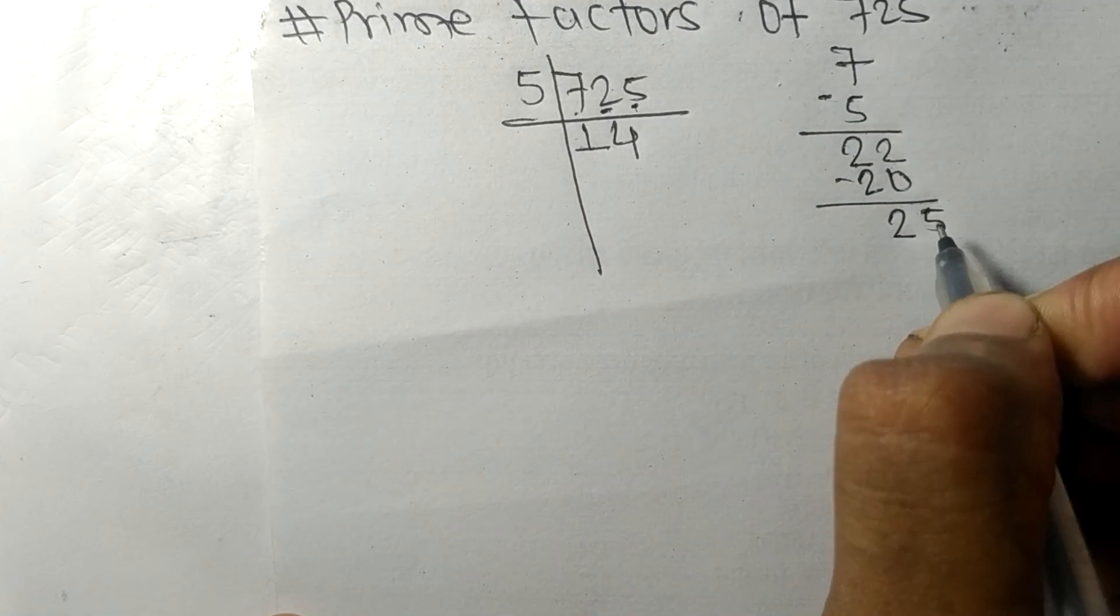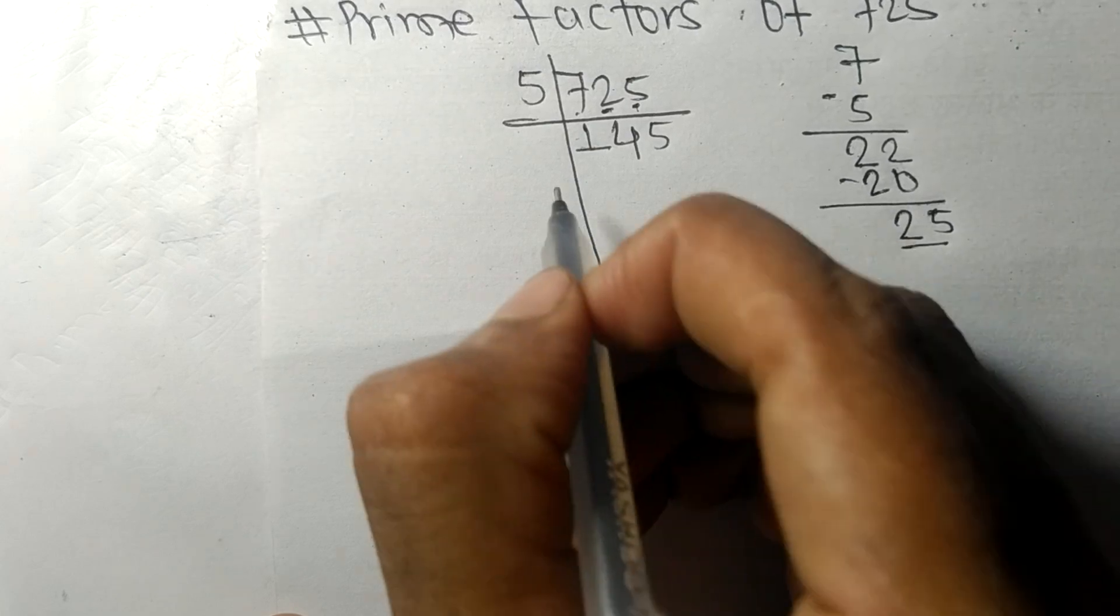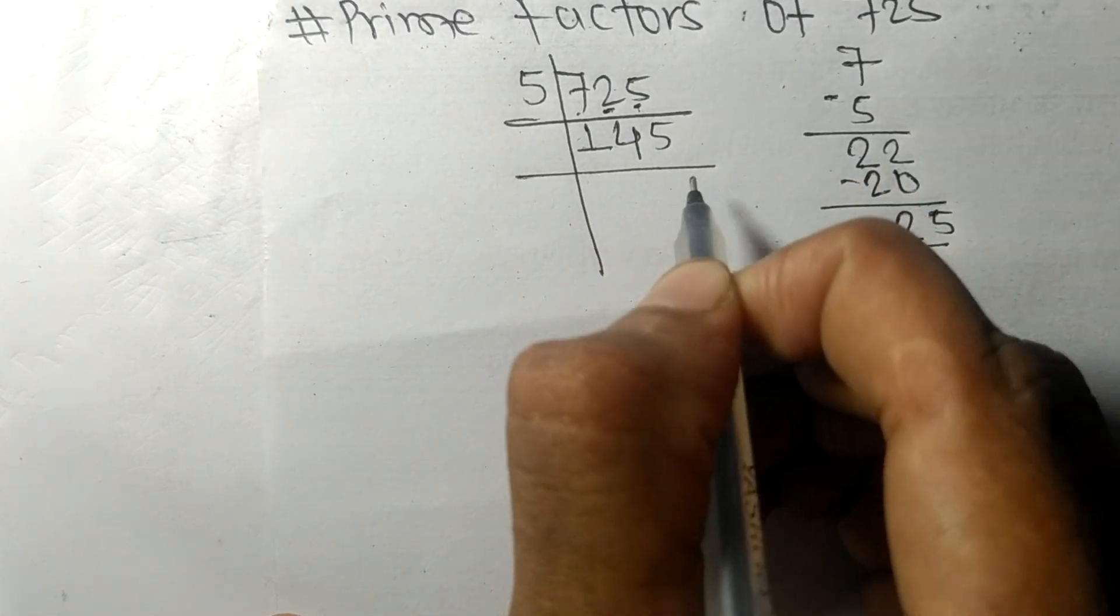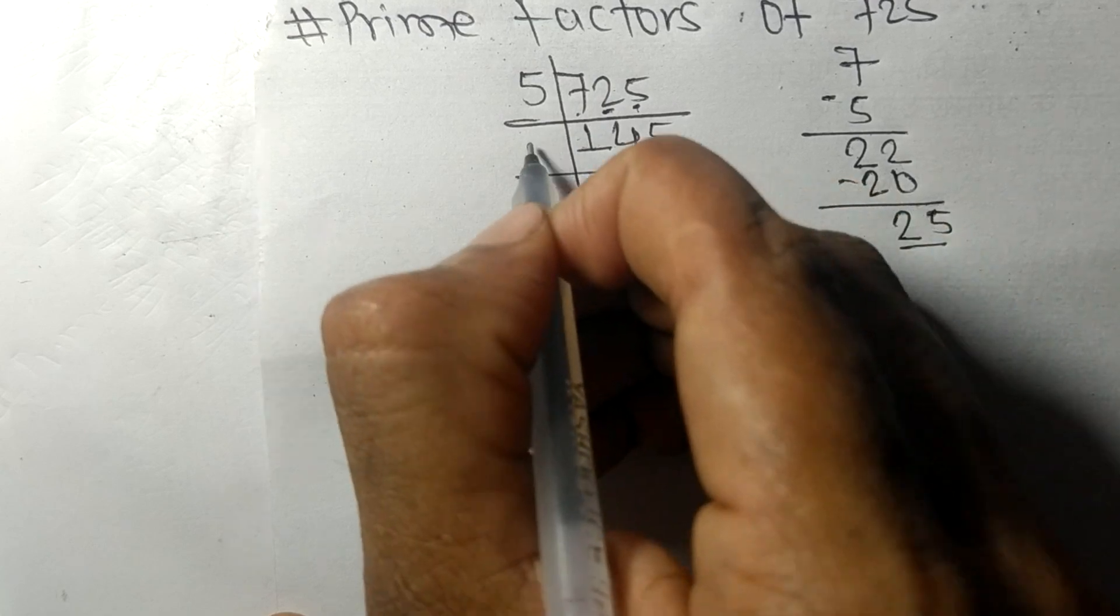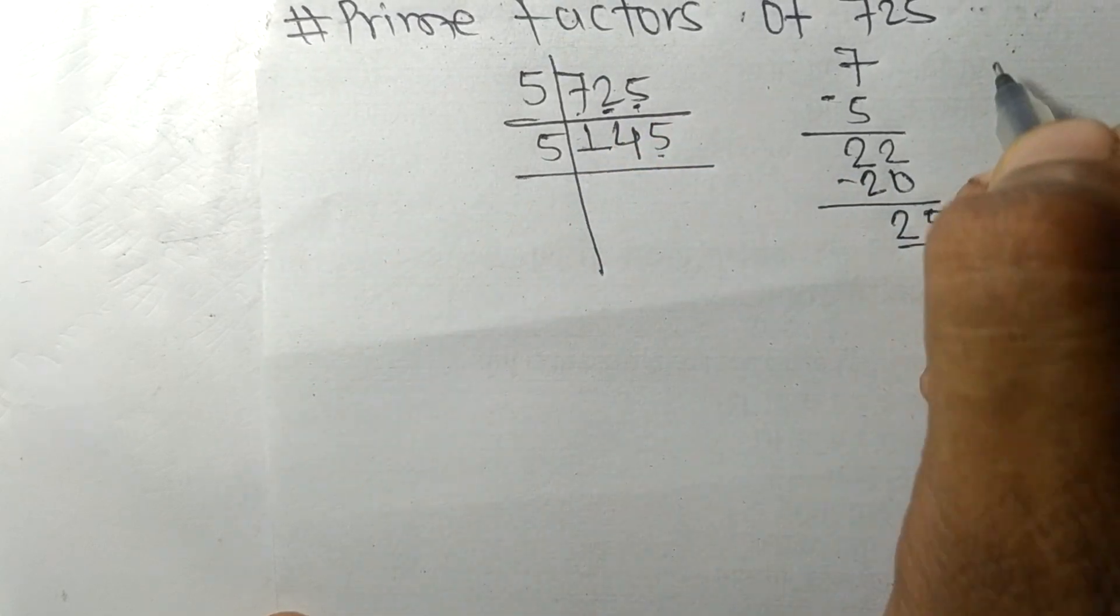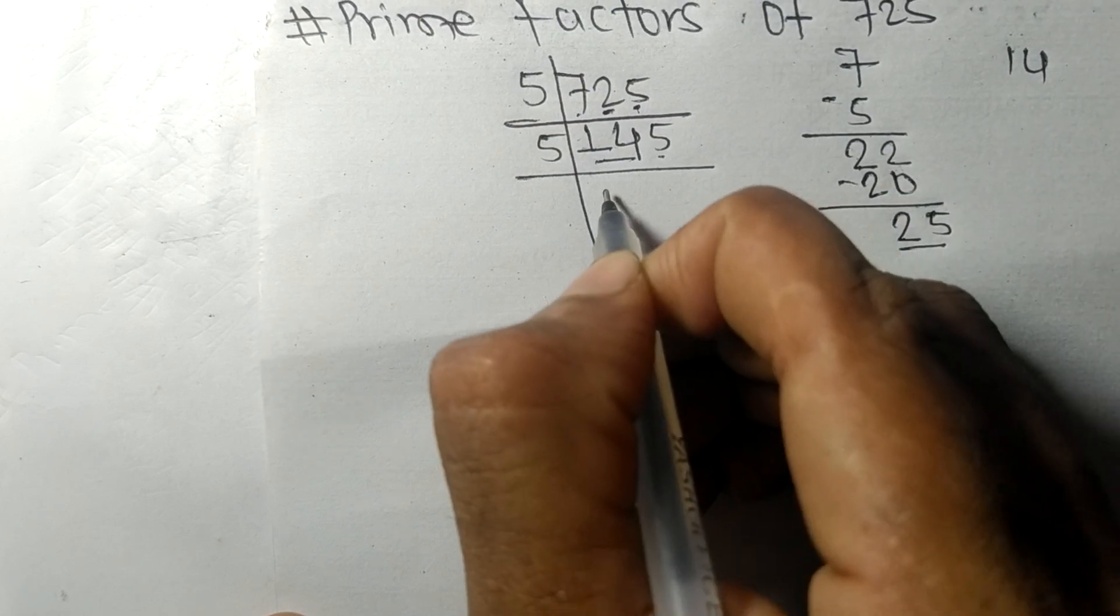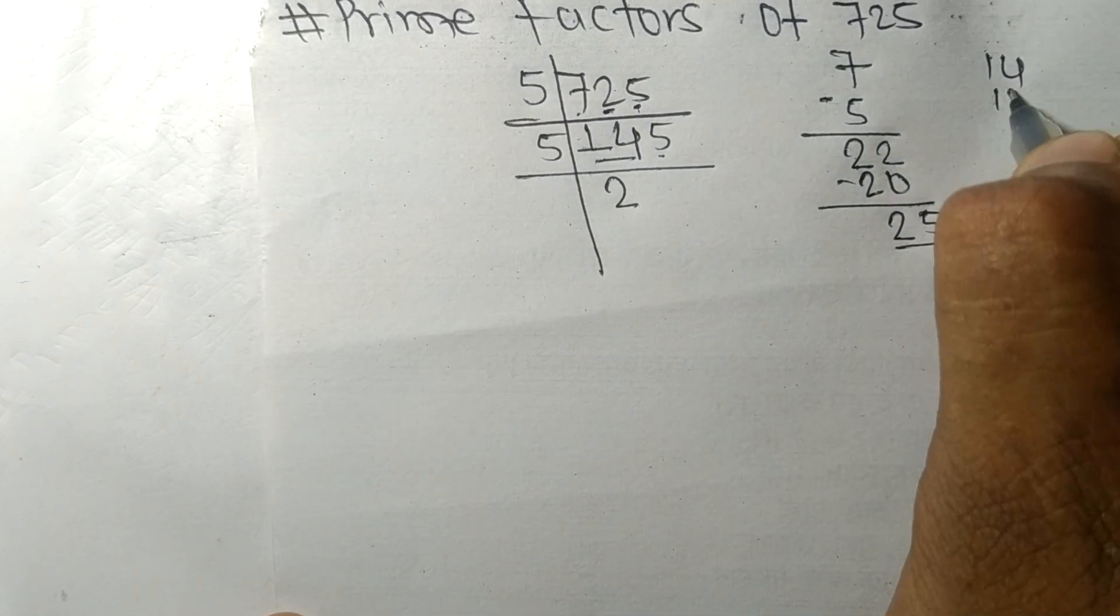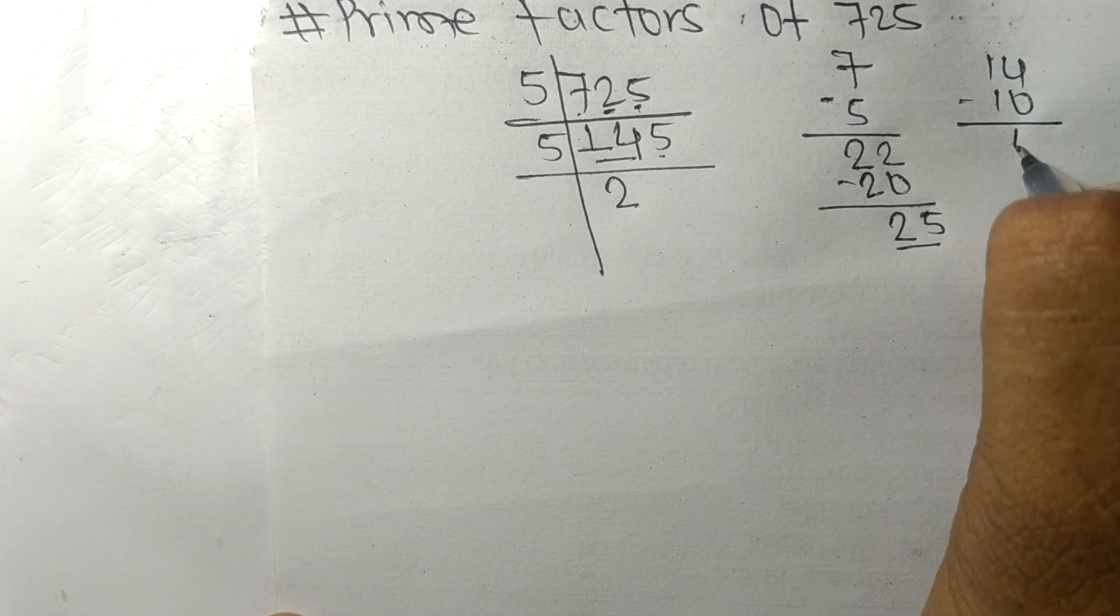We get 145, which has 5 at the last, so it is divisible by 5 again. First we have 14, so 5 times 2 equals 10, and on subtracting we get 4.